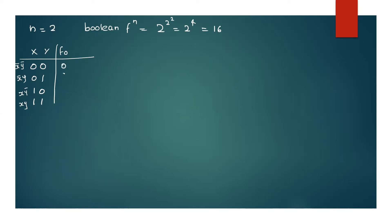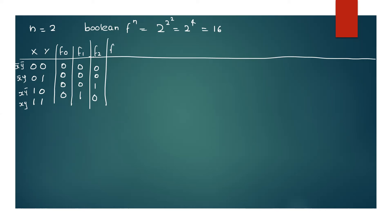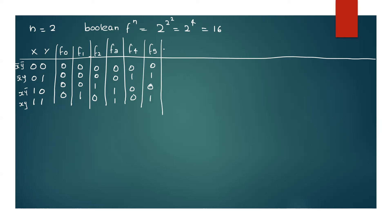The 16 functions are listed as follows. F0: 0,0,0,0. F1: 0,0,0,1. F2: 0,0,1,0. F3: 0,0,1,1. F4: 0,1,0,0. F5: 0,1,0,1. F6: 0,1,1,0. F7: 0,1,1,1. F8: 1,0,0,0.